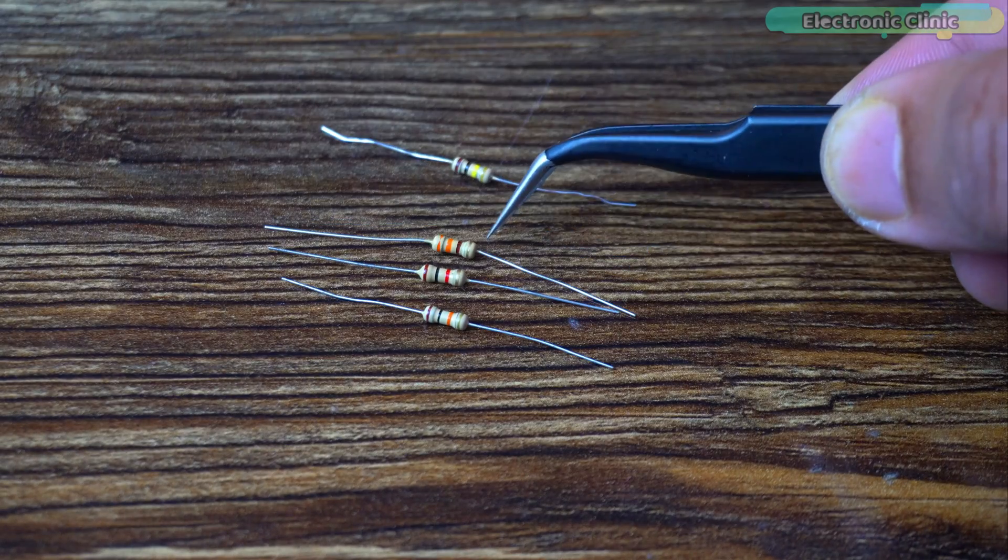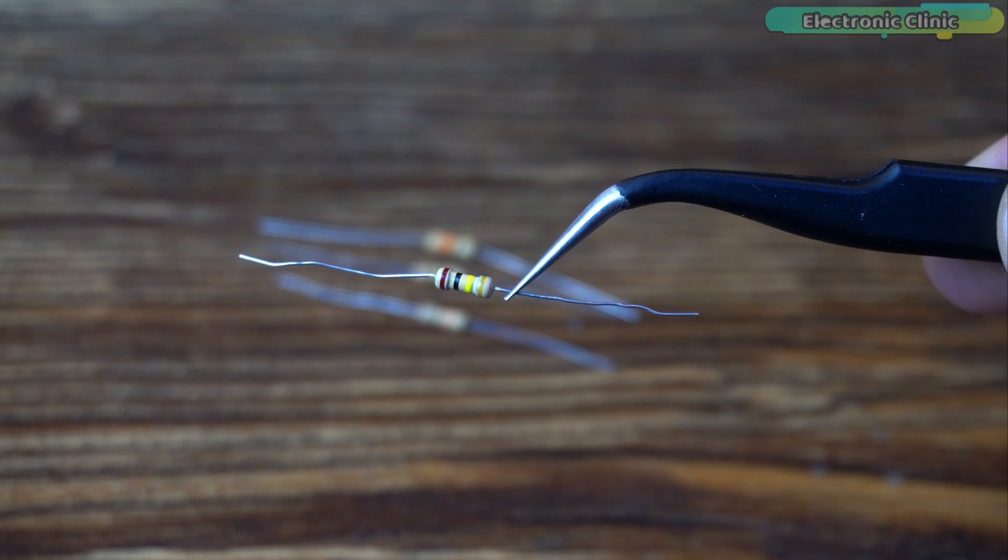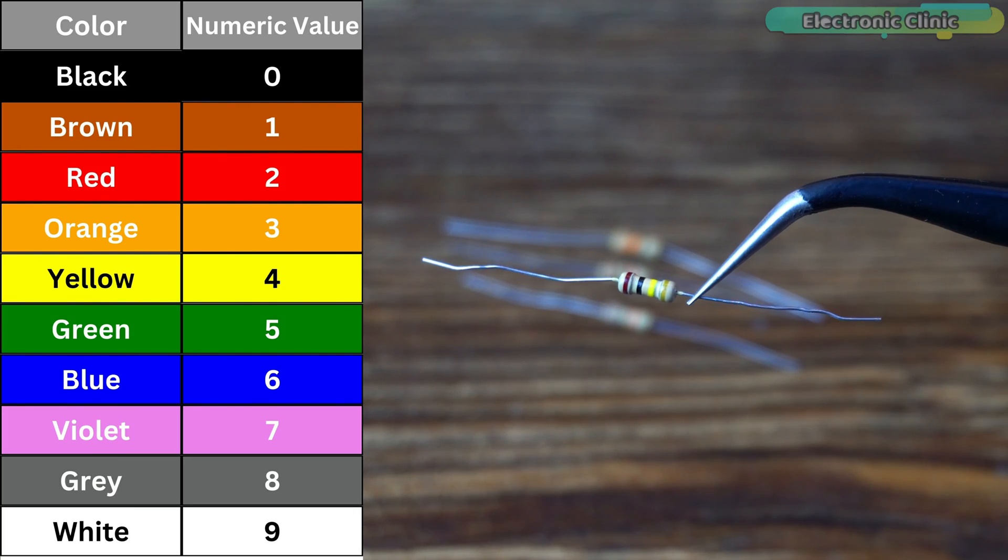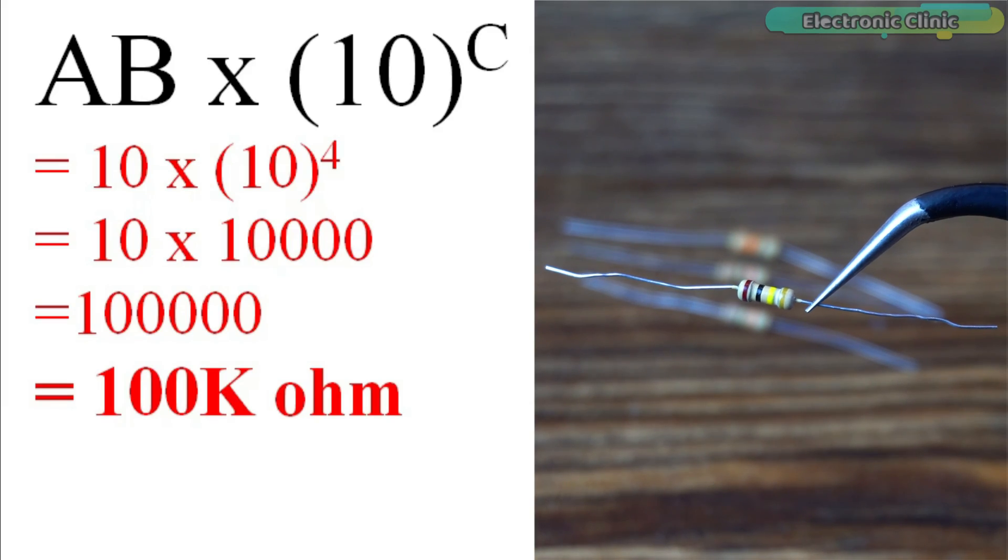Let's read the final one. The color bands are brown, black and yellow. Brown equals one, black equals zero and yellow equals four. As per the formula, this resistor is 100 kilo ohms.